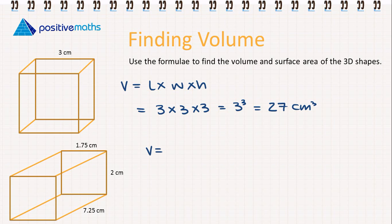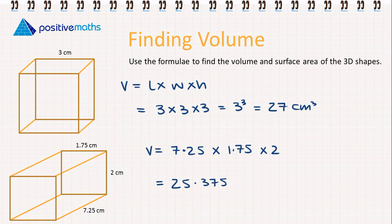Now the volume of the rectangular solid. In this case we have our length of 7.25, multiplied by our width of 1.75, multiplied by our height of 2. So our volume is 25.375cm cubed. Remembering: cm cubed for volume, cm squared for area.